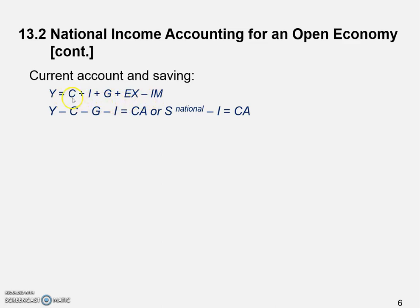We rewrite the identity by moving consumption, investment, and government spending to the left-hand side, giving us Y minus C minus G minus I, which equals CA — the current account. CA represents the difference between exports and imports. Another way to write this equation is: national saving minus investment equals the current account surplus, assuming exports is greater than imports, so CA is positive.